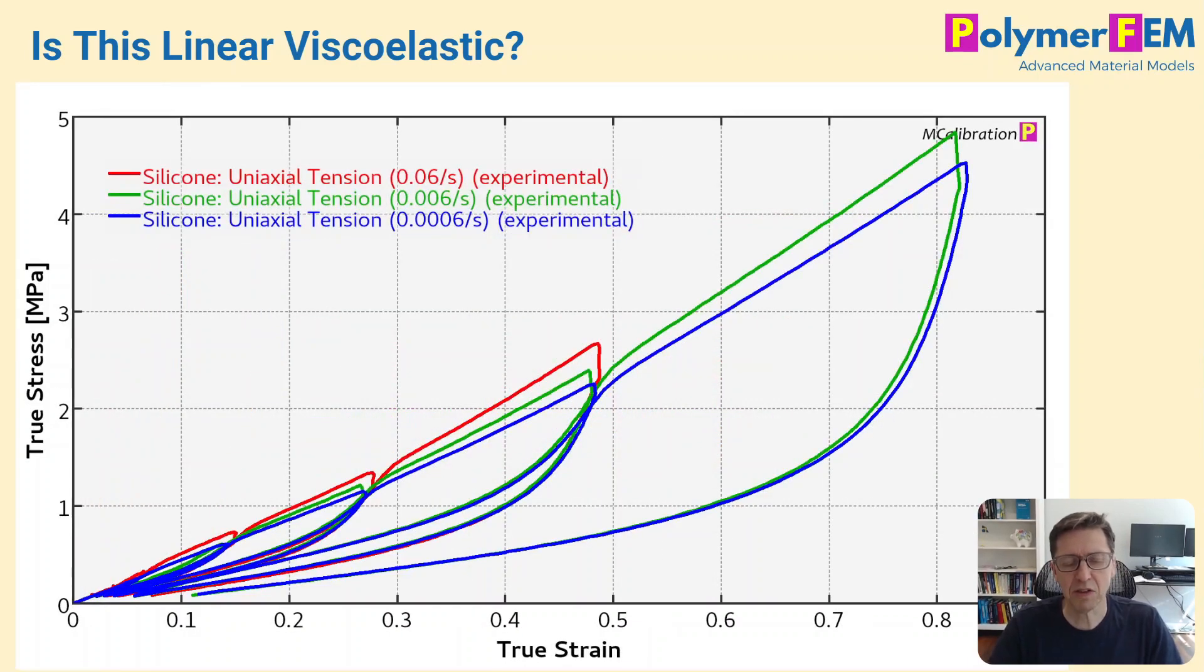But how about this one? This is a silicon rubber, uniaxial tension, three different strain rates, some cyclic loading and unloading curves. Is this material linear viscoelastic? Could you use a linear viscoelastic material model here?